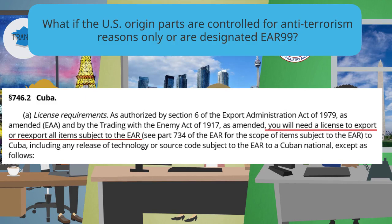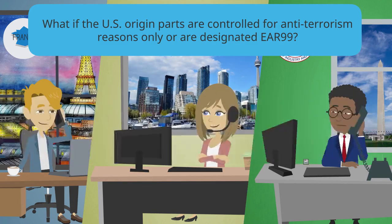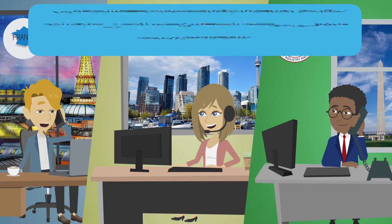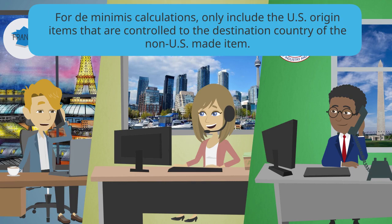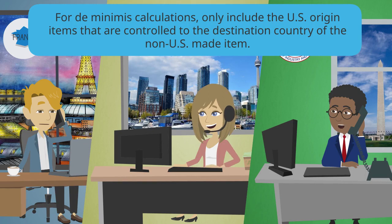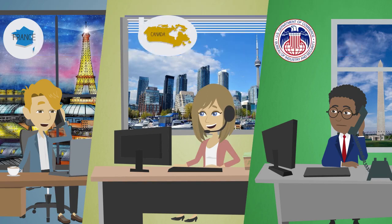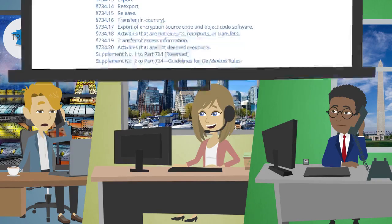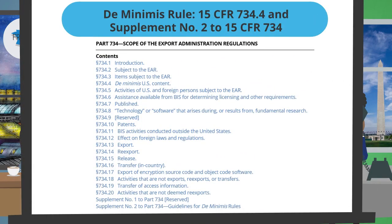François states: So my calculation should only include the U.S. origin items that are controlled to the specific country. A blue text bubble confirms: For de minimis calculations, only include the U.S. origin items that are controlled to the destination country of the non-U.S. made item. The BIS counselor affirms this is correct, then explains: The de minimis rule is described in Section 734.4, and the calculation is detailed in Supplement No. 2 to Part 734 of the EAR. It considers the fair market value of controlled U.S. content as a percentage of the total value of the end item.